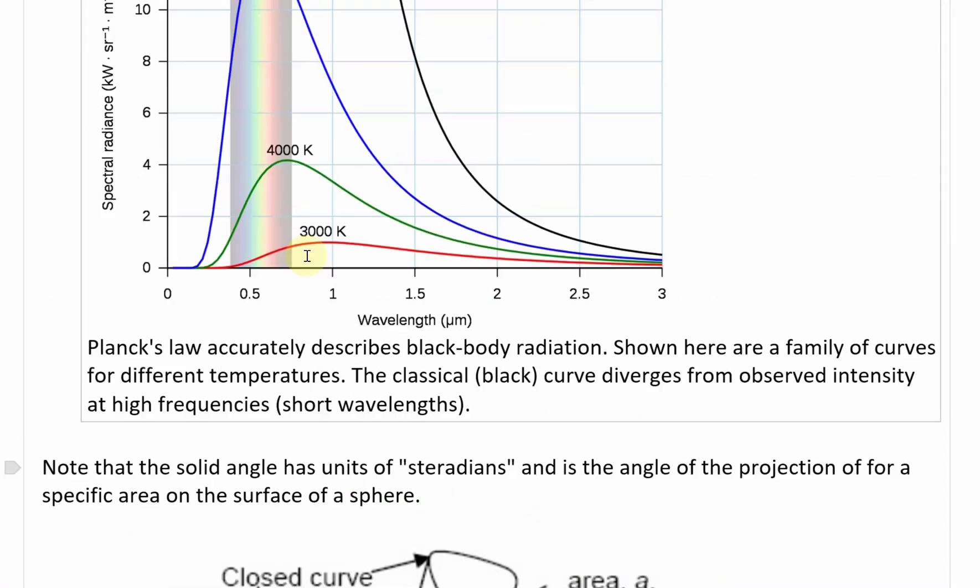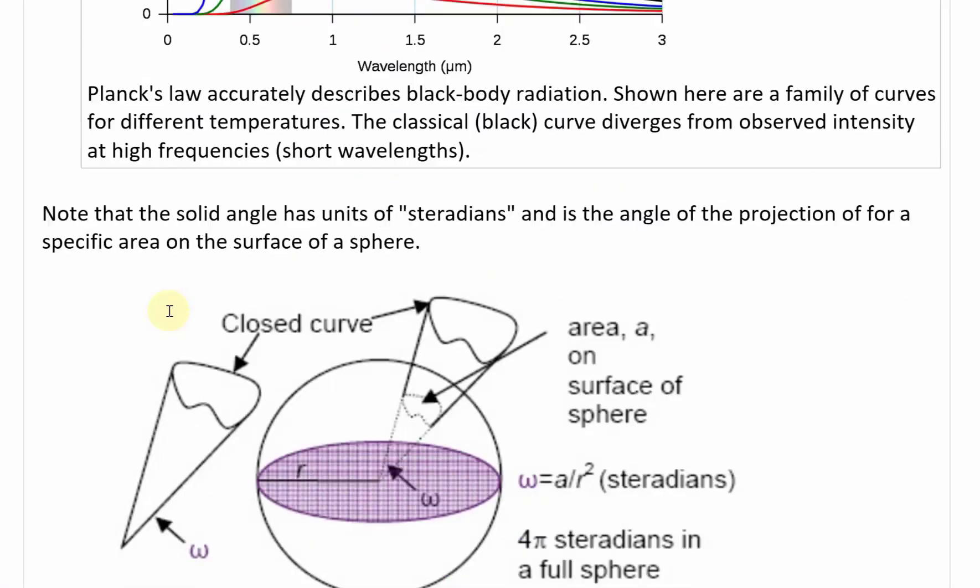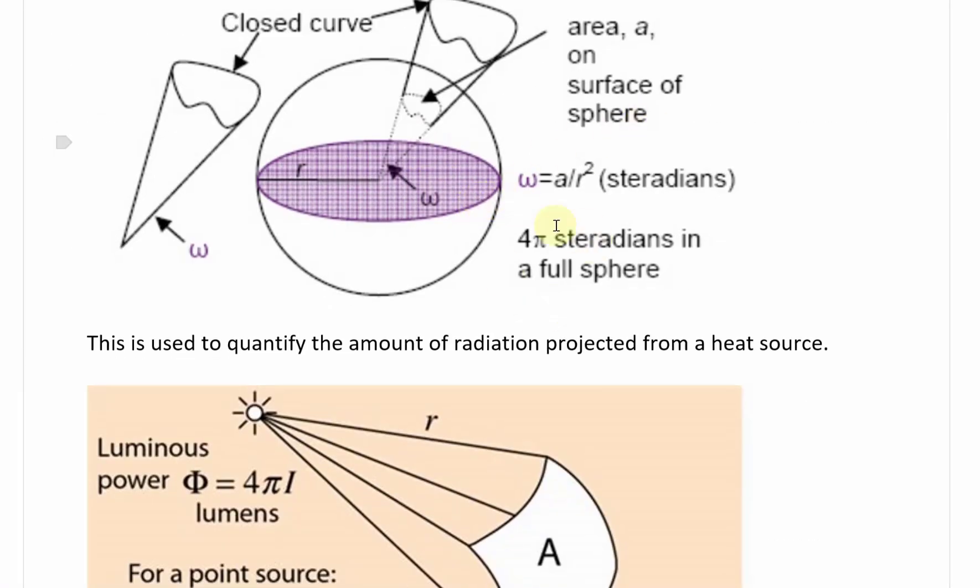Note that the solid angle, this part right here, per unit solid angle. Just to illustrate what they mean by that, the solid angle has units of steradians and is the angle of the projection of a specific area on the surface of a sphere. If you have radiation from this zone there with this W for solid angle, there's going to be a projected area on this surface over there. It's just an equation for it.